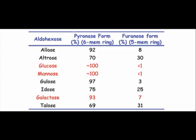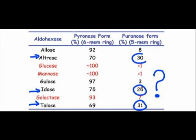For altrose, talose, and idose, something else besides ring strain must be influencing the equilibrium, otherwise we would see about 100% of the pyranose form in every case. What factor associated with the pyranose form might be causing the larger proportion of furanose form for these sugars?